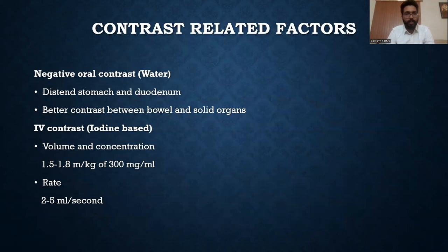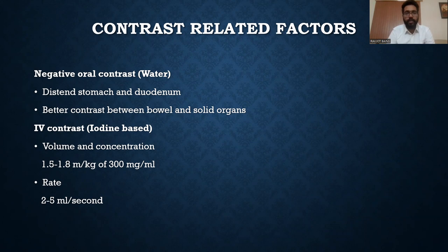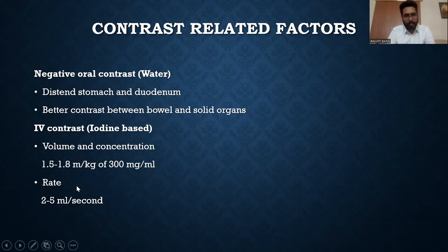Contrast-related factors: negative oral contrast is used to distend the stomach and duodenum, providing better contrast between the bowel and solid organs. IV contrast is usually iodine-based. Volume and concentration is 1.5 to 1.8 ml per kilogram of 300 mg per ml, at a rate of 2 to 5 ml per second.